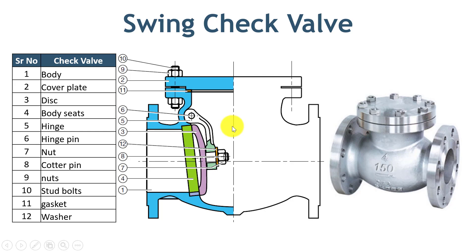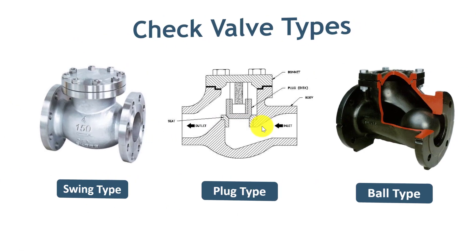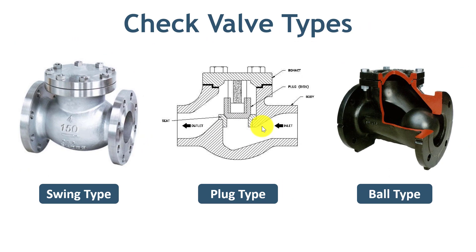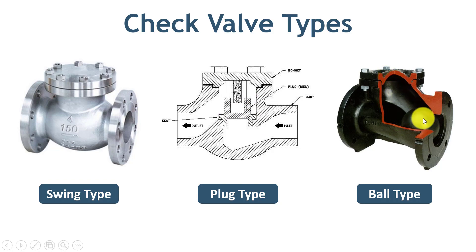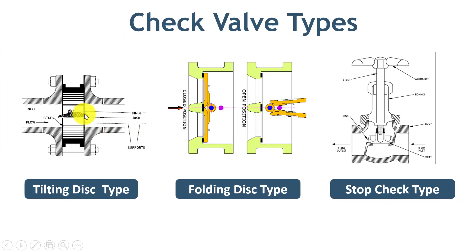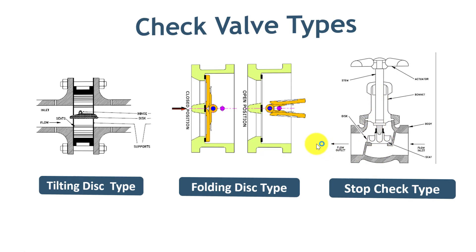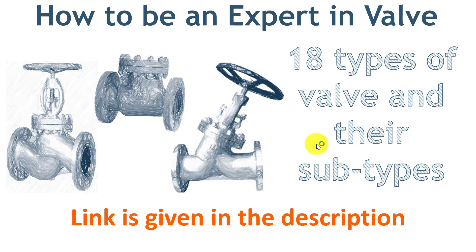Check valves are available in different types depending on your process requirement. On this slide, I have shown commonly used check valves. The first is the swing type, which I have already explained. The second is the lift check valve with plug arrangement. The third is the lift check valve with ball arrangement. On the next slide, the first is the tilting disc check valve, the second is the split disc or folding disc check valve, and the third is the stop check valve. You can learn more details about these valves in my course 'How to be an Expert in Piping Valves,' available from the link in the description.